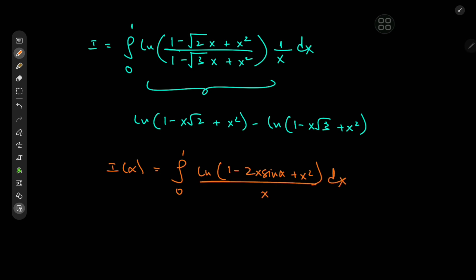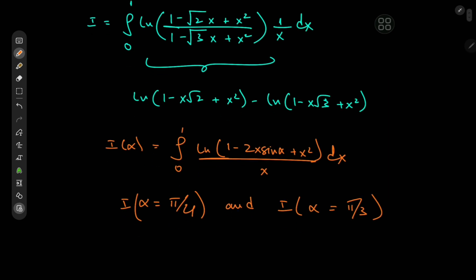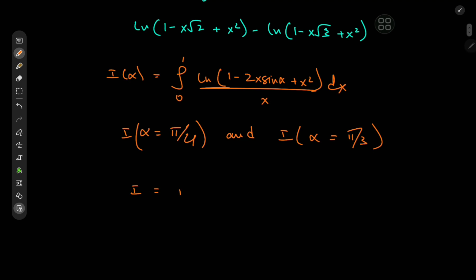Notice that for 2 sine(α) to equal root 2, we need α equal to π/4 — that's one target case. The other target case: for 2 sine(α) to equal root 3, we need α equal to π/3. The target integral is actually the difference I(π/4) minus I(π/3).